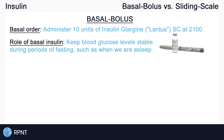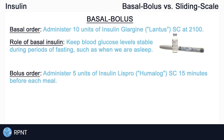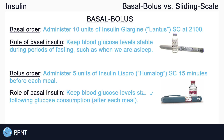The second part of the basal bolus insulin order is the bolus order. An example of a bolus insulin order would be: administer five units of insulin Lispro, a rapid-acting insulin, subcutaneously 15 minutes before each meal. Insulin Lispro will start working in about 15 minutes and will keep the client's blood glucose levels stable for each meal. Bolus doses of insulin are administered at mealtimes to keep blood glucose levels stable following glucose consumption. Normally our body will secrete its own bolus of insulin after each meal, but diabetic clients may not have the ability to do this, so we administer a rapid-acting or short-acting insulin just before or just after each meal depending on the type of insulin.